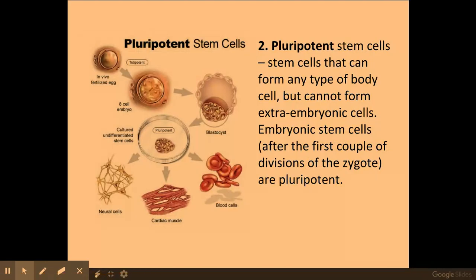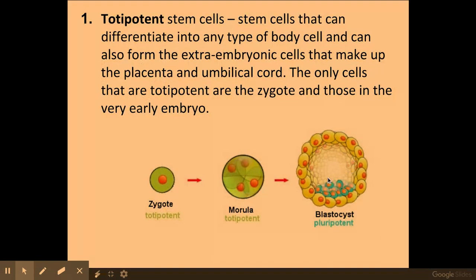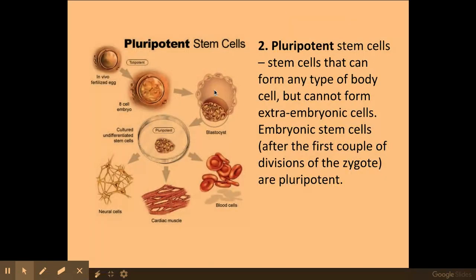The next stage is the pluripotent stem cells, and these are taken from the blastocyst. If I go back one slide — the blastocyst is this blue bit here. These are the stem cells designated to become the body of the embryo, and if you were to remove these from the blastocyst you could cause them to form a number of different body types. The pluripotent stem cells can form any body cell, but they cannot form the extra-embryonic cells such as the umbilical cord and placenta.